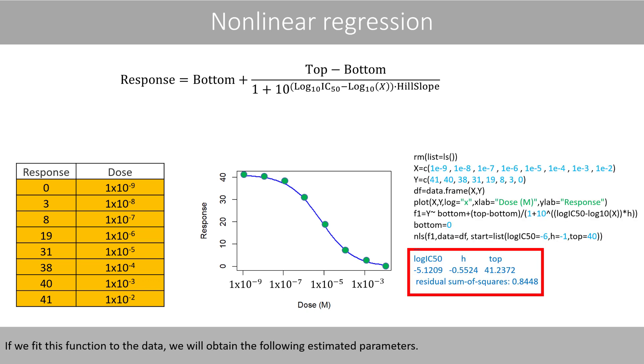If we fit this function to the data, we will obtain the following estimated parameters. Note that the hill slope is now negative, which is expected since the curve now has a negative slope.